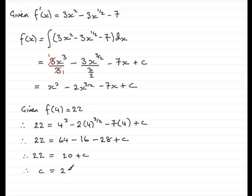So, what is f of x then in its simplest form? So, we can say that therefore f of x equals, and all we do is just go back up here, copy this out, and replace the c with the 2. So, we've got f of x equals x cubed minus 2x to the power 3 over 2 minus 7x plus the constant of integration, which we now know is 2. And there you have it.